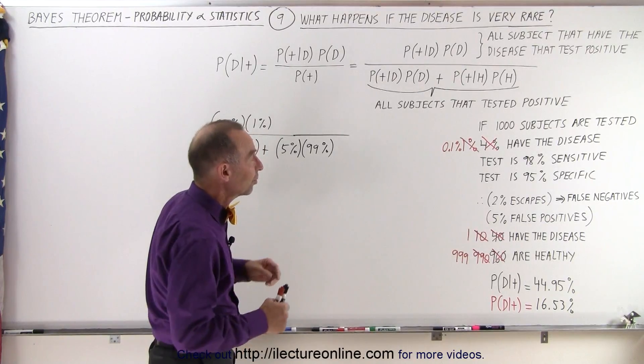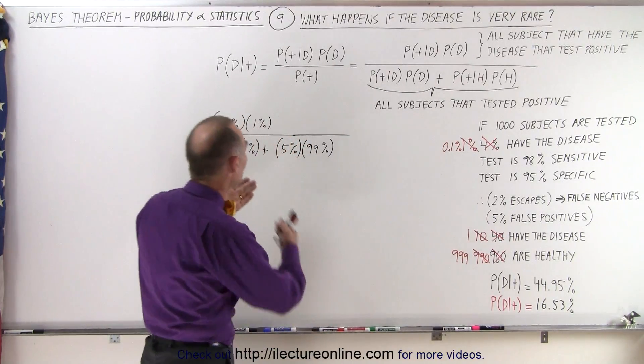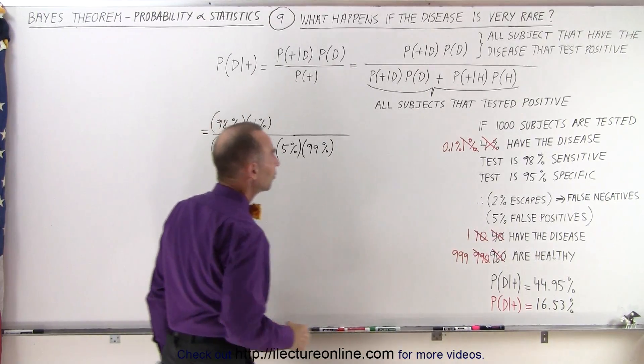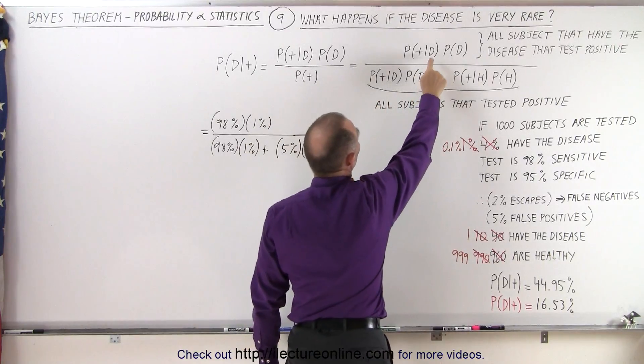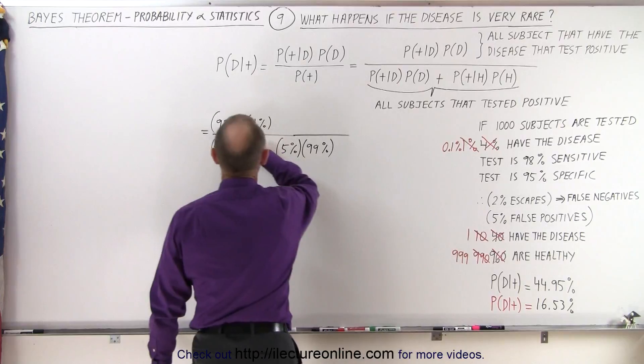So in those particular circumstances, what would happen if only one in a thousand had the disease? What would change in the calculation? Well, 98% is still the probability that if someone has a disease, they would be tested positive. That's the sensitivity. That doesn't change.